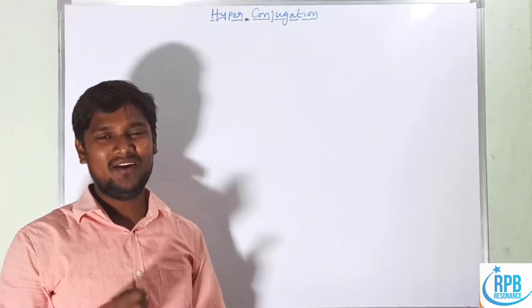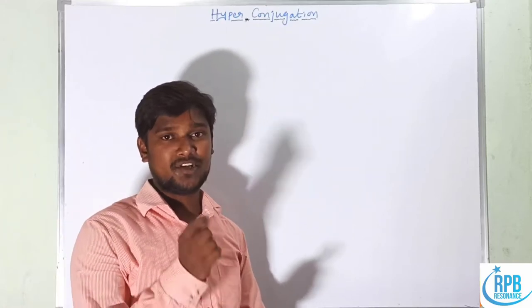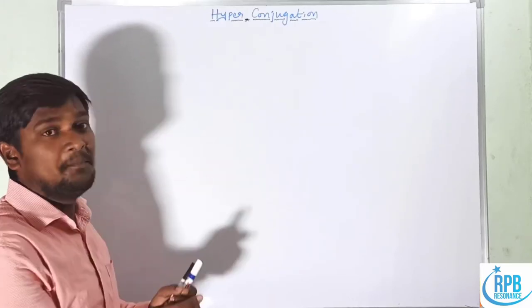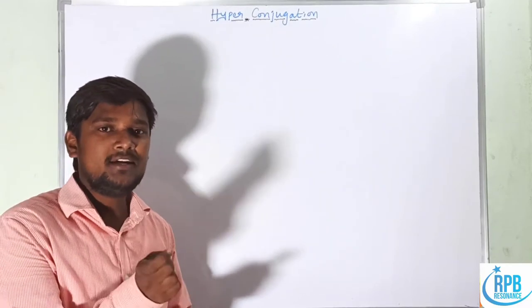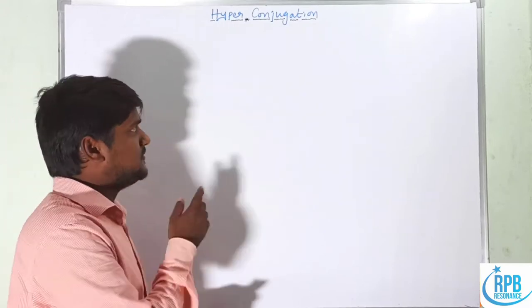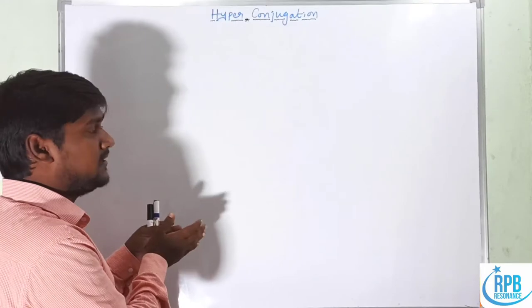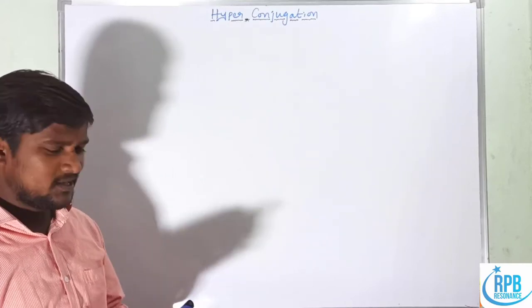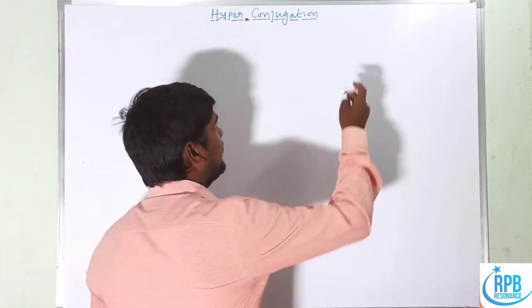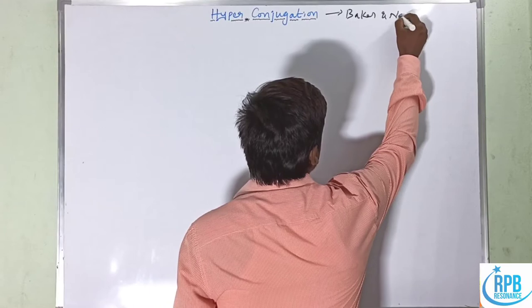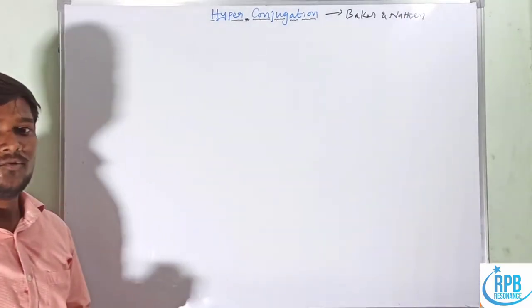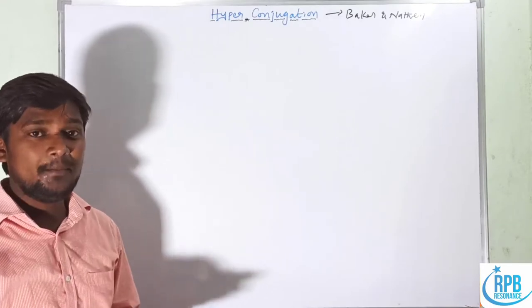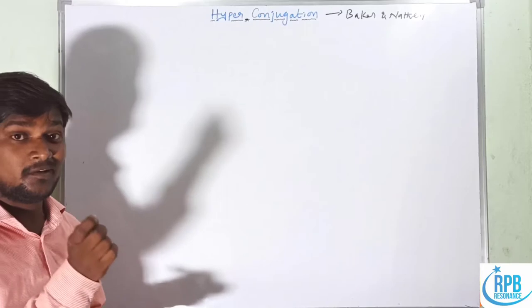Hi everyone, welcome to the RPA Resonance Commission. Let us continue our lectures on GOC, that is General Organic Chemistry. This is lecture number seven. Today we are going to deal with a new term which is hyperconjugation, one of the effects of electronic displacement in covalent bonds. This is the third effect — we have already discussed the inductive effect and mesomeric effect completely.